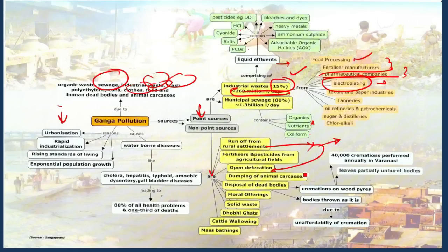Dumping of animal carcasses and disposal of the dead bodies. Hindus consider Ganga River as sacred. They wish to be cremated near the Ganga River. Cremation on wood pyres is one of the reasons for the pollution of the Ganga River. In Varanasi alone, we find 40,000 cremations performed annually.